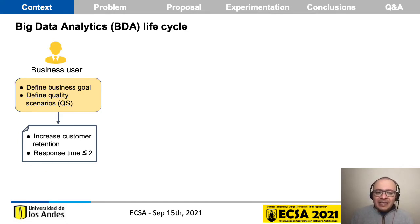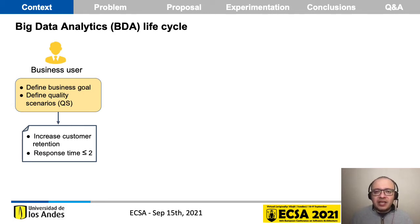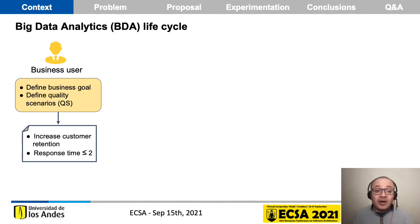In a Big Data Analytics (BDA) lifecycle, we have three main knowledge domains. In the first one, the business user has to define what is the business goal of the BDA project. For example, to use a real example, increase the customer retention. Additionally, the business user with the solutions architect has to define what is the quality scenario to achieve using this solution — for example, the response time has to be lower than two seconds.